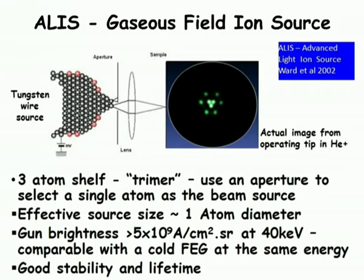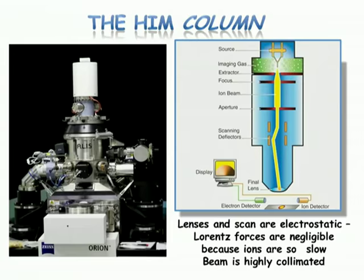What you're seeing is a simplified view of how the beam is generated. You have this tungsten wire source, and on the right-hand side you see green dots — each one of those dots is an atom from which the ion beam is being emitted. This trimer — that group of three atoms — we simply pick one as our source. We now have something which is one atom in size. Its brightness is of the same order of magnitude as a cold-field emission gun in standard scanning electron microscopes.